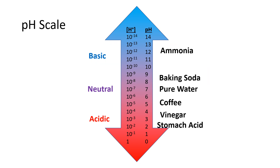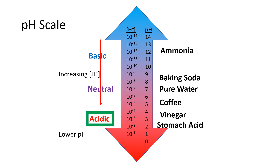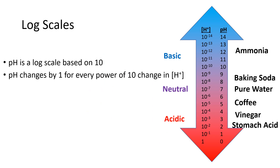Going down the scale represents increasing concentration of H+ and lower pH values. Solutions with pH values below the neutral pH of 7.00 are acidic. Examples of acidic solutions are coffee, vinegar, and stomach acid. The pH is a log scale based on the powers of 10, and the pH changes by 1 for every power of 10 change in the concentration of H+.